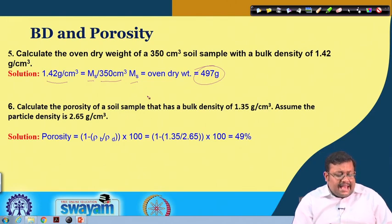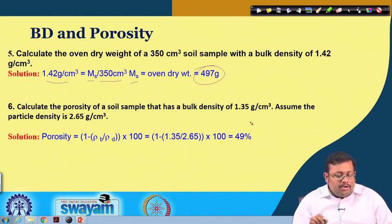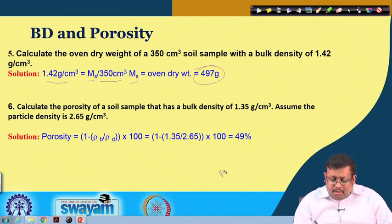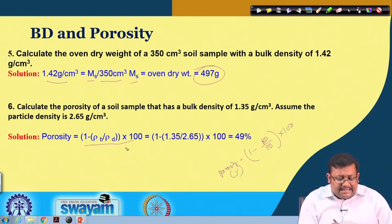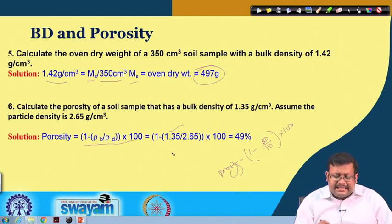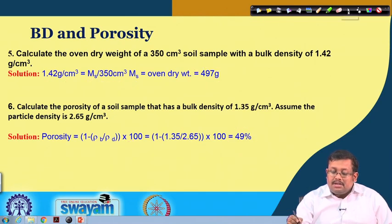The sixth question: calculate the porosity of a soil sample with a bulk density of 1.35 grams per cc, assuming particle density of 2.65 grams per cc. The formula is: porosity equals 1 minus (bulk density divided by particle density) times 100. Substituting: 1 minus (1.35 over 2.65) times 100 gives a porosity of 49 percent.